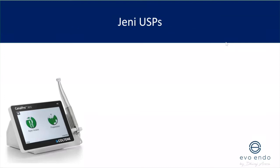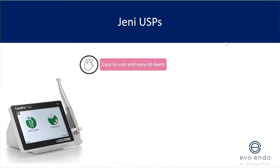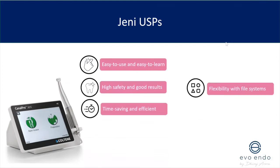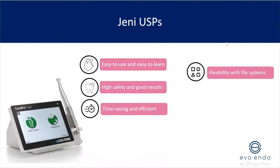The motor I use is the Genie motor, but fundamentally you need a motor that will allow you to have speed and torque control. You can use whichever motor you want so long as it gives you speed and torque control. Follow the manufacturer's guidelines as to what speed and torque settings to use for that file system — this automates your process.